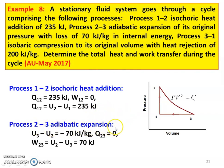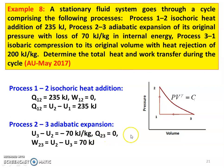For Process 2 to 3, adiabatic expansion: heat transfer Q23 equal to 0. There is a decrease in internal energy of 70 kilojoules, so U2 minus U3 equal to 70 kilojoules. From the first law, W23 equal to U2 minus U3 equal to 70 kilojoules.